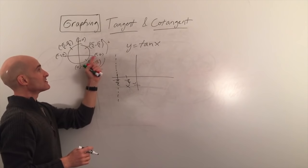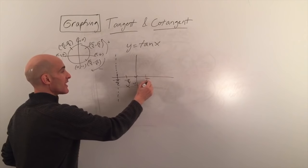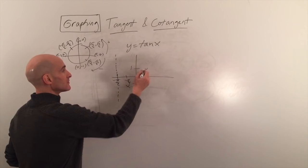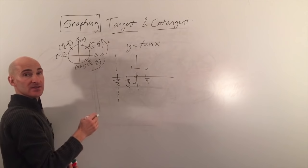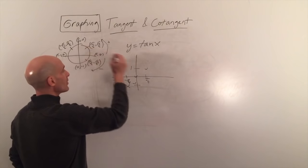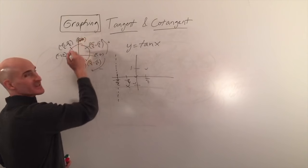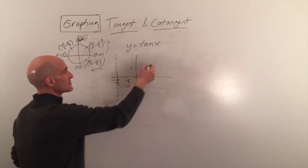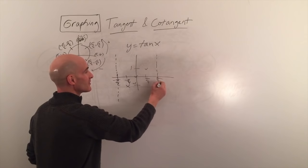At positive pi over 4, y over x gives positive 1. At pi over 2, the coordinates are 0 comma 1, so 1 over 0 is undefined — there's your asymptote. The coordinates are 0 comma 1, meaning we divide 1 by 0, which is undefined.